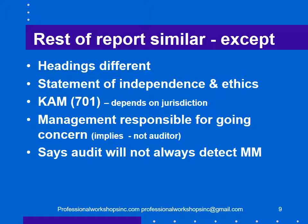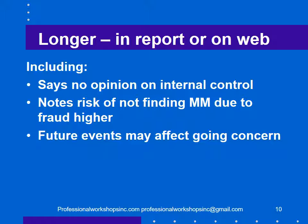The report is similar to the old report except the headings are different. There is now a paragraph stating that the auditor is independent and has followed the relevant ethical standards. Key audit matters will be required under section 701 — though that depends on the jurisdiction, as different jurisdictions are doing it differently. There is also a statement that management is responsible for determining whether or not the company is a going concern — which kind of implies that the auditor isn't, which I like — and an explicit statement that the audit will not always detect material misstatement, which is kind of a disclaimer. Additionally, there is a much longer description of what the audit is and does, which can either appear in the face of the report or on your website and be referred to in the report.